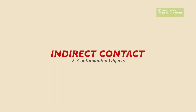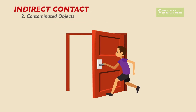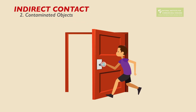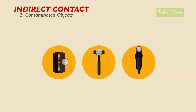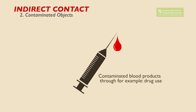Contaminated objects: some organisms can live on objects for a short time. If you touch an object, such as a door knob, soon after an infected person, you might be exposed to infection. Transmission occurs when you touch your mouth, nose, or eyes before thoroughly washing your hands. Infectious diseases can also be spread through contaminated blood products and medical supplies.